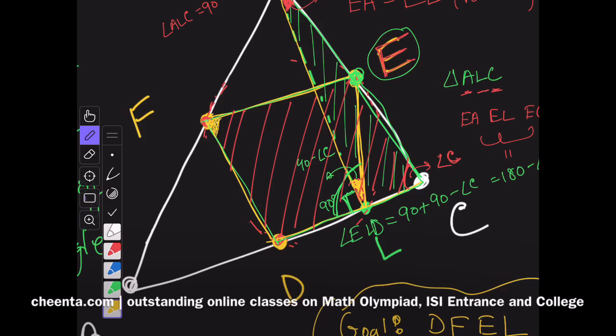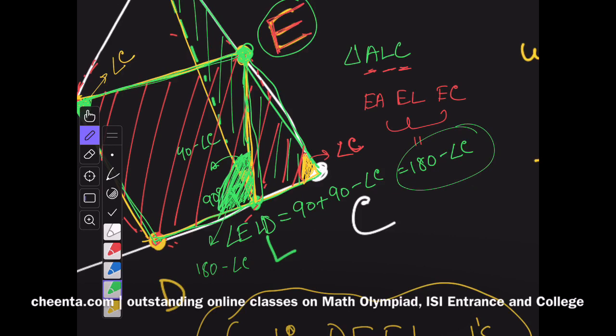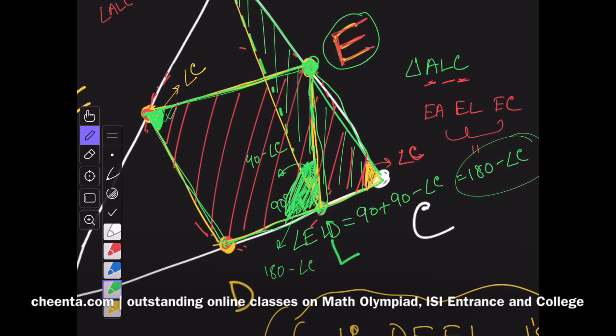This particular thing is a parallelogram, so this angle is angle C. Why? Because opposite angles of a parallelogram are equal. Now we are back in the quadrilateral. This green angle is angle C, and this green angle is 180 minus angle C. Notice that two opposite angles add up to 180 degrees, which means that this is a cyclic quadrilateral.